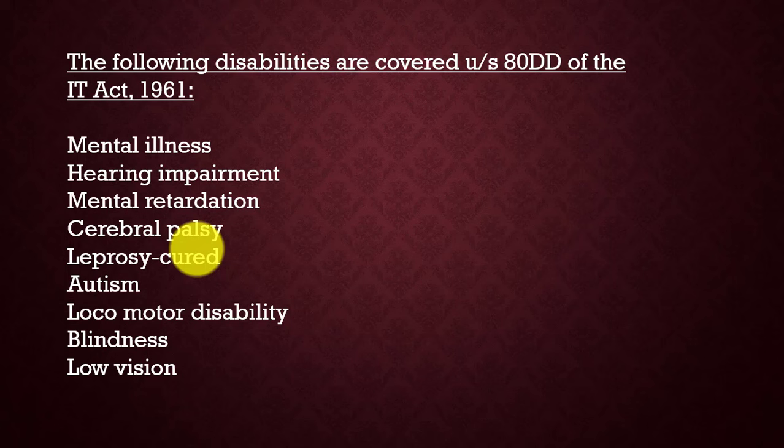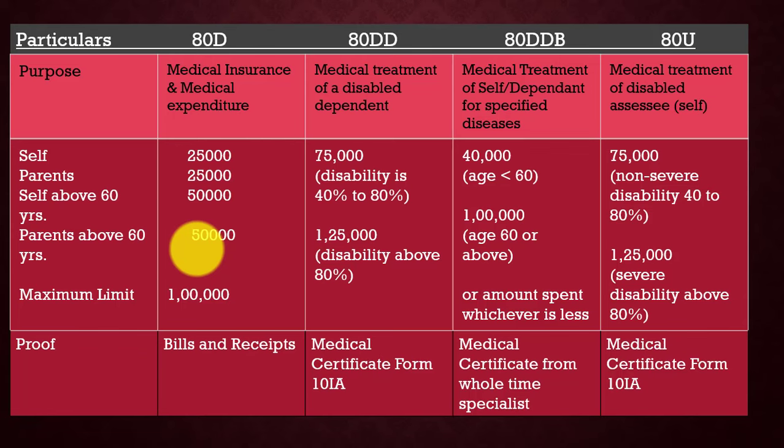As proof for Section 80DD, you need to submit a certificate from a medical practitioner in Form 10-IA. The diseases specified in Section 80DD under the Income Tax Act are: mental illness, hearing impairment, mental retardation, cerebral palsy, leprosy, autism, locomotor disability, blindness, and low vision. In this section, there is no age limit — the deduction is purely on the basis of disability percentage.